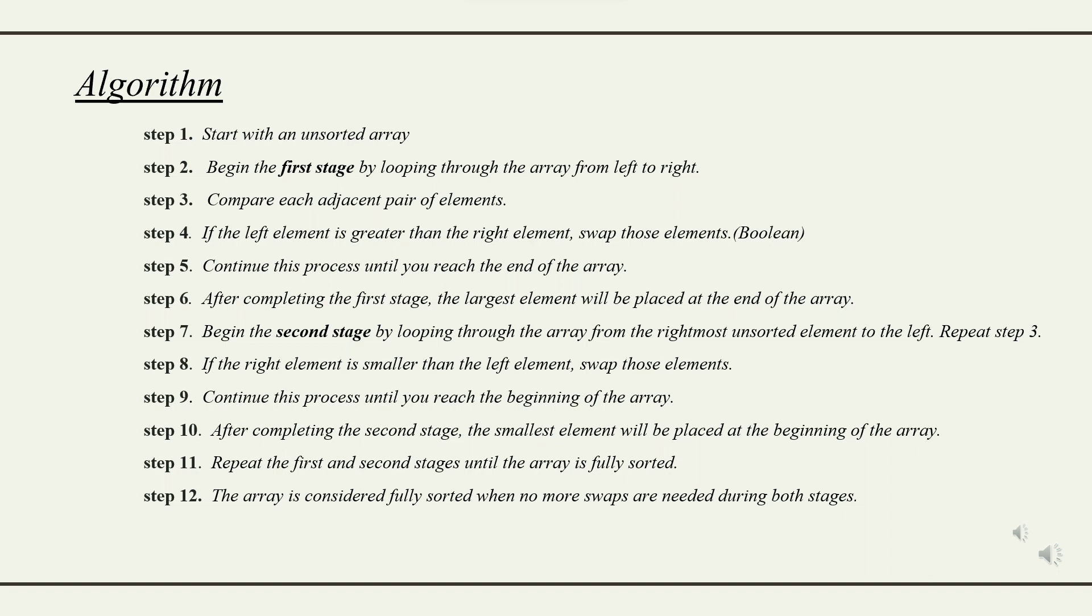Algorithm: Step 1, start with an unsorted array. Step 2, begin the first stage by looping through the array from left to right. Step 3, compare each adjacent pair of elements. Step 4, if the left element is greater than the right element, swap those elements. Step 5, continue this process until you reach the end of the array. Step 6, after completing the first stage, the largest element will be placed at the end of the array.